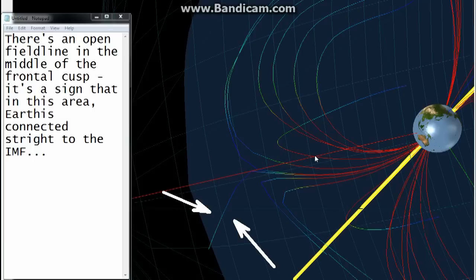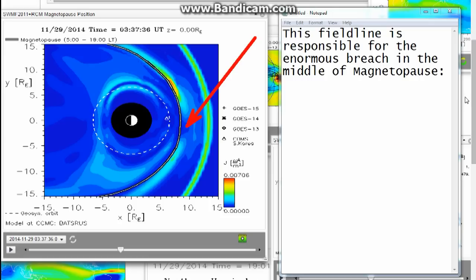There is an open field line in the middle of the frontal cusp. It's a sign that in this area Earth is connected straight to the IMF. This field line is responsible for the enormous bridge in the middle of the magnetopause.